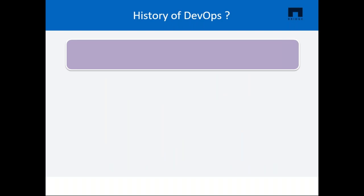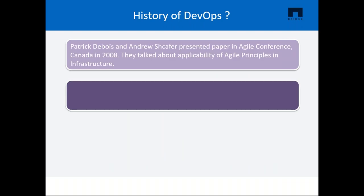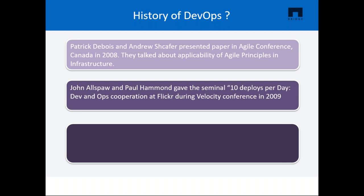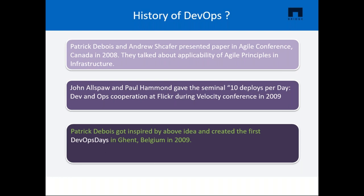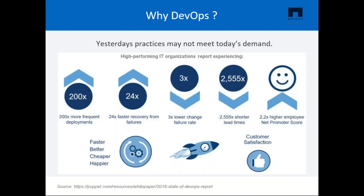Let's look at the history of DevOps. Patrick Devois and Andrew Schaffer presented a paper at the Agile conference in Canada in 2008, talking about the applicability of Agile principles in infrastructure. Following them, John Allspaw and Paul Hammond gave the seminal '10 deploys per day' talk about Dev and Ops cooperation at Flickr during the Velocity conference in 2009. At those times, 10 deploys per day was remarkable — even now it's not happening in many organizations. Patrick Devois was inspired and created the first DevOps Day in Belgium in 2009 — and that's how the term DevOps was coined.